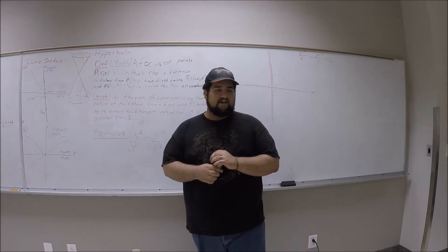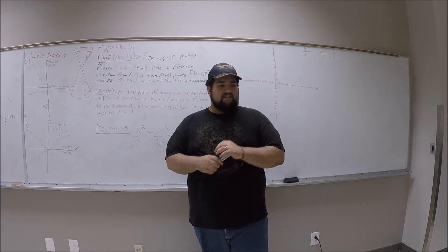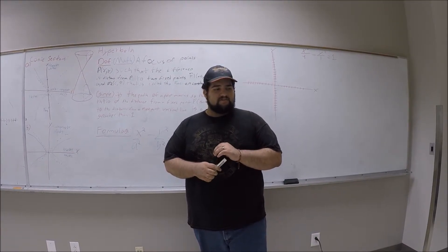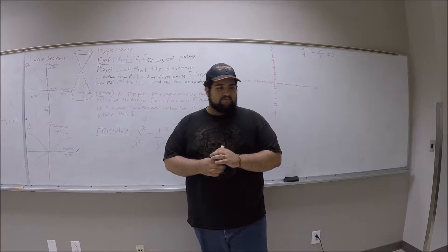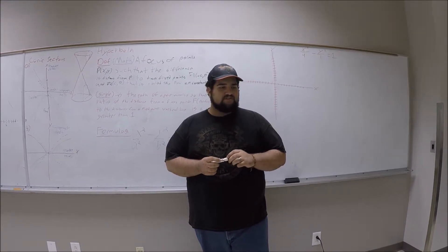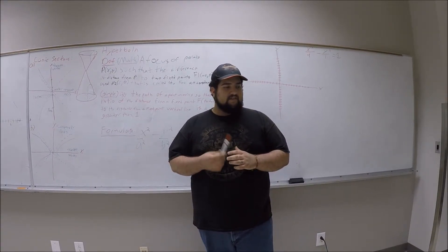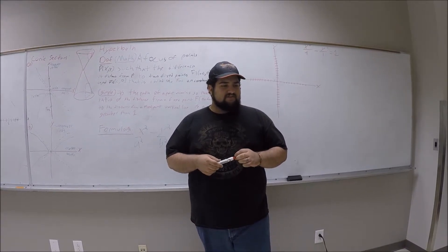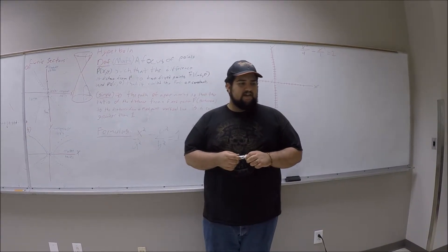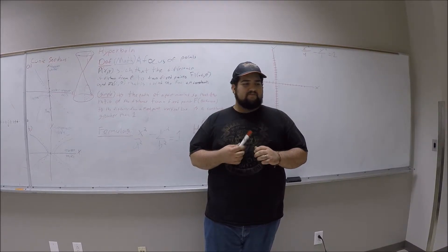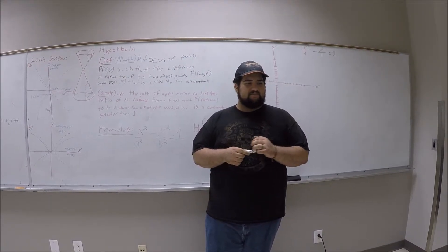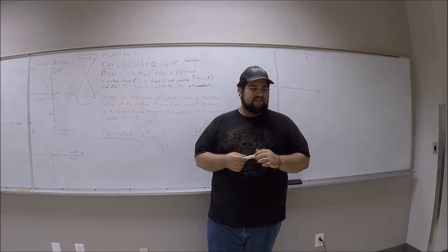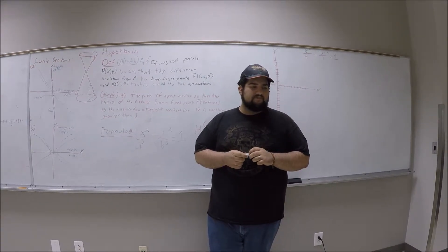What is an ellipse? It's the set of points (x, y) in a plane such that the sum of the distances from two distinct fixed points, called foci, is always constant. To draw an ellipse: like a circle, you have a center, but in the ellipse you have two focus points and you draw around them to make the ellipse shape.